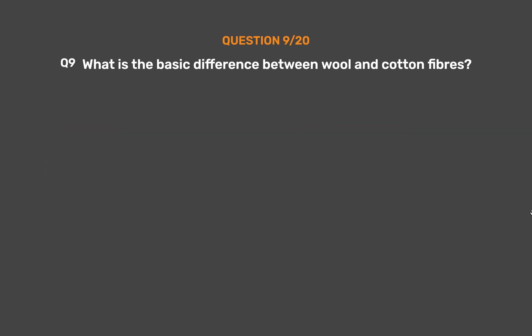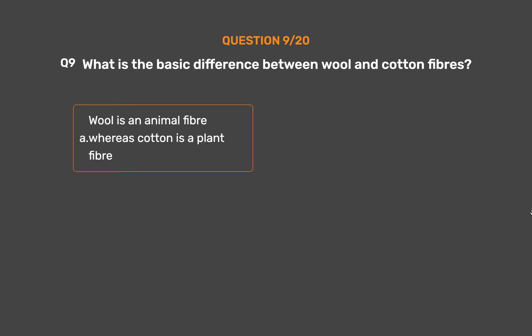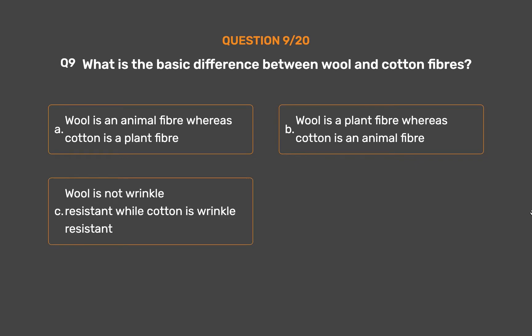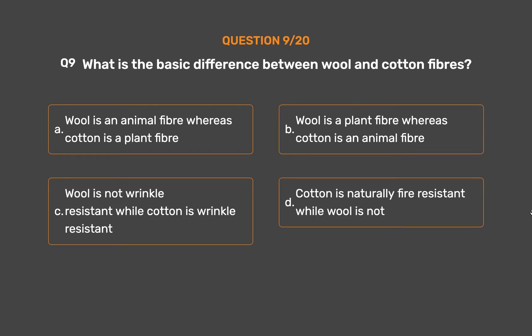Question number 9. What is the basic difference between wool and cotton fibers? Option A, Wool is an animal fiber whereas cotton is a plant fiber; Option B, Wool is a plant fiber whereas cotton is an animal fiber; Option C, Wool is not wrinkle resistant while cotton is wrinkle resistant; Option D, Cotton is naturally fire resistant while wool is not.